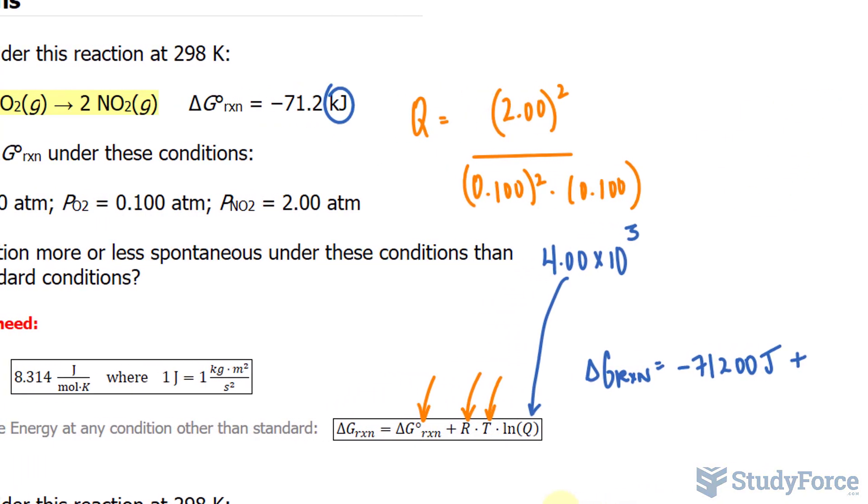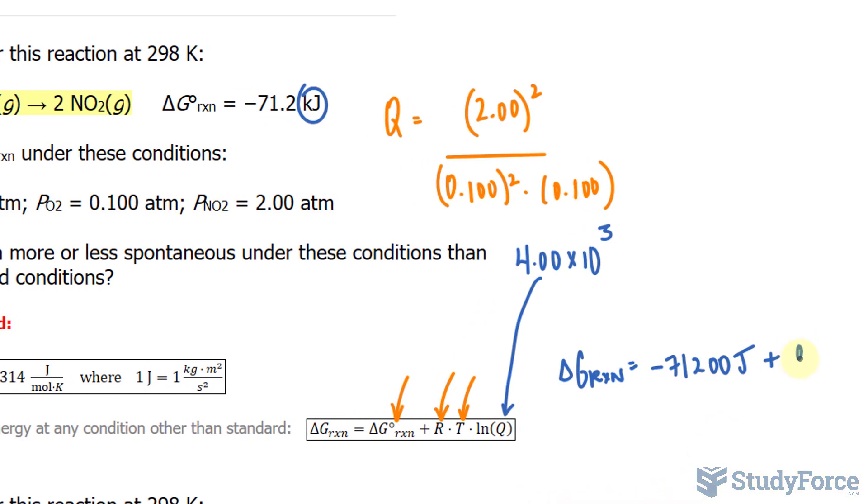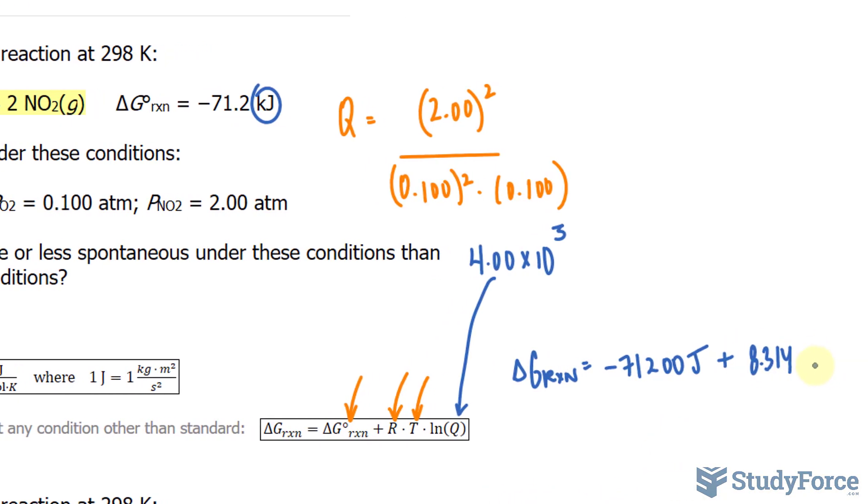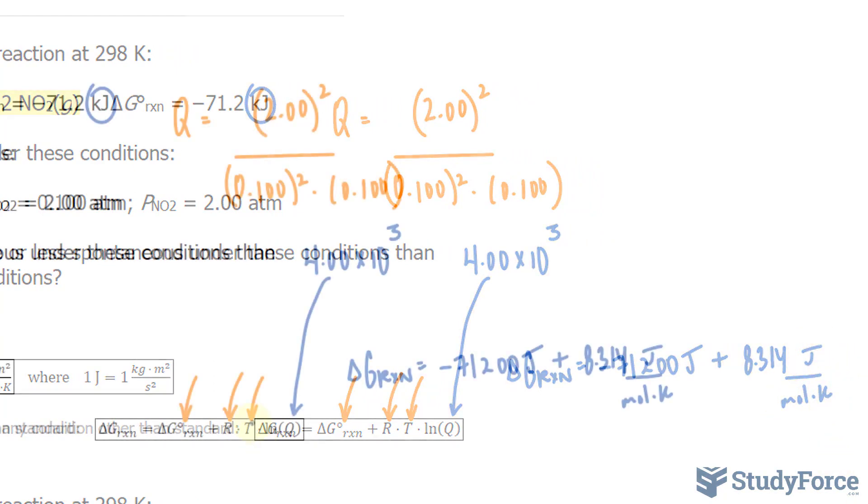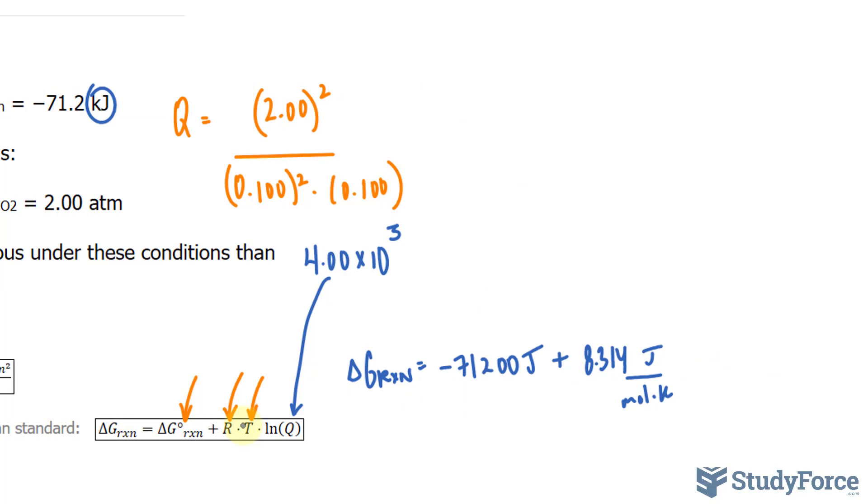R is given in the question, 8.314, 8.314 joules per mole times Kelvin, times the temperature. And this needs to be in Kelvin as well. We've been given 298 at the beginning. So 298 Kelvin.